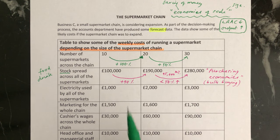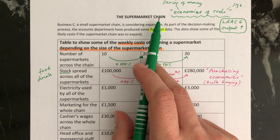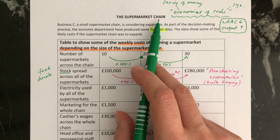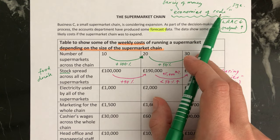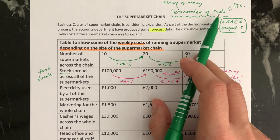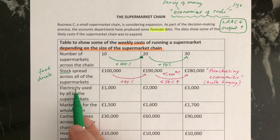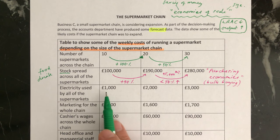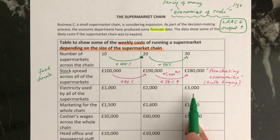This is the second video about a supermarket chain and the different costs that they have within that chain and how they may experience economies of scale. In the last video I explained what those were and gave a couple of examples. This is showing the forecast of how much the electricity will cost for the whole of the supermarket chain in three different scenarios.